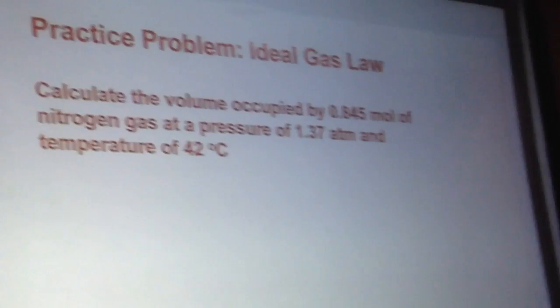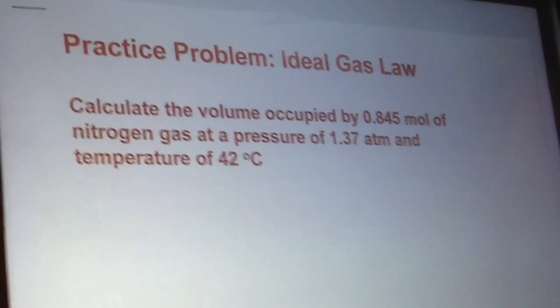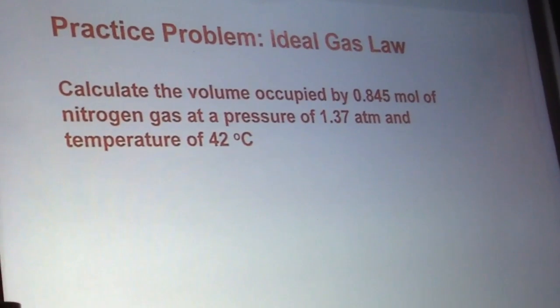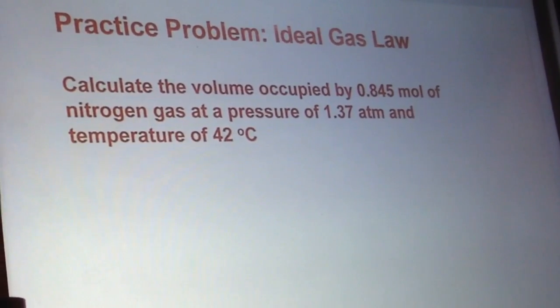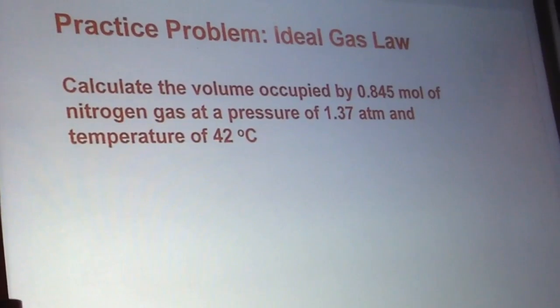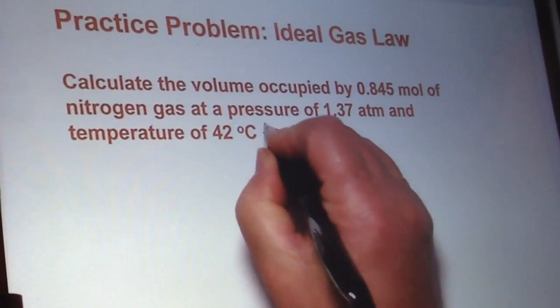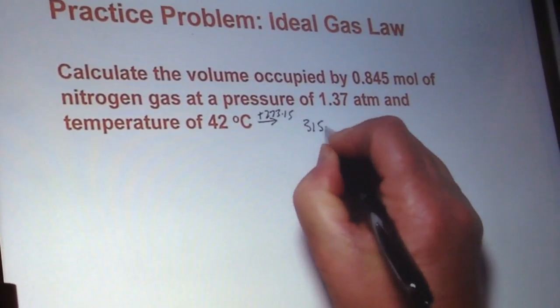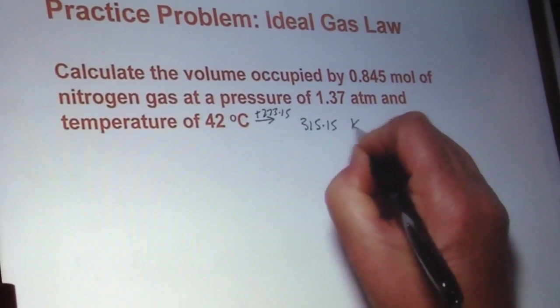This one says calculate the volume occupied by a certain number of moles of gas: 0.845 moles of nitrogen gas at a pressure of 1.37 atmospheres, temperature of 42 celsius. So immediately, 273.15 goes 315.15 Kelvin.